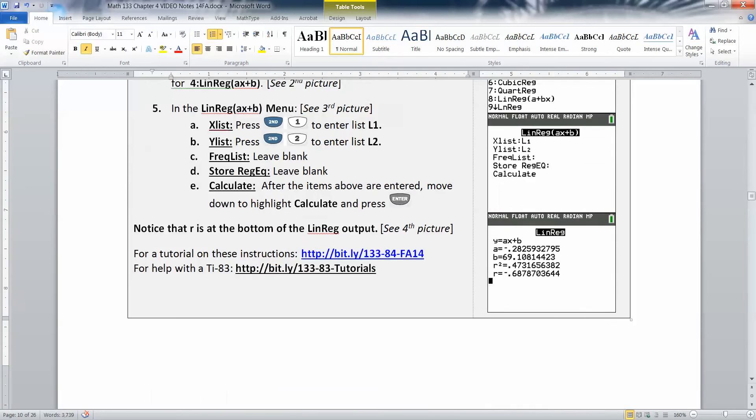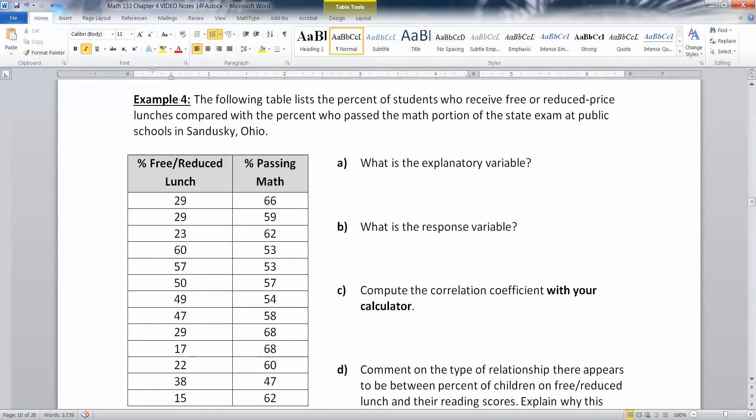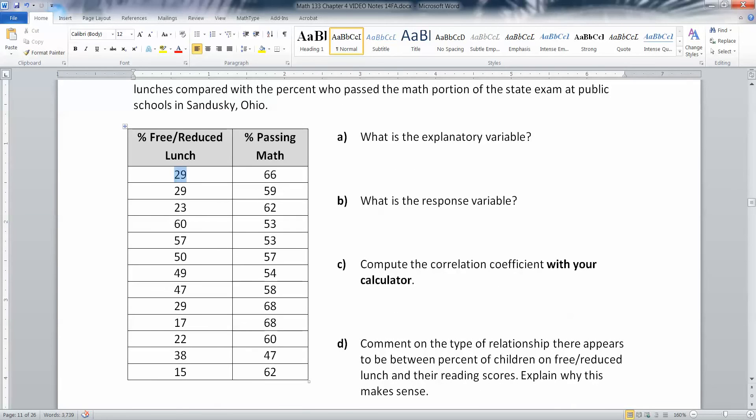Once we've done that, we have to enter your data. I've got a data set here. This table lists the percent of students who receive free or reduced price lunches compared with the percent who passed the math portion of the state exam at public schools in Sandusky, Ohio. Here's a school with 29% on free reduced lunch and 66% passed the math test. Another school had 60% on free reduced lunch and 53% passed.